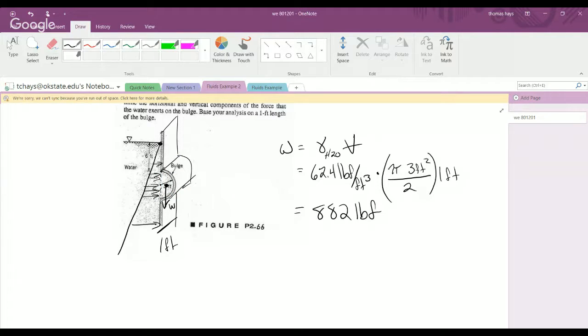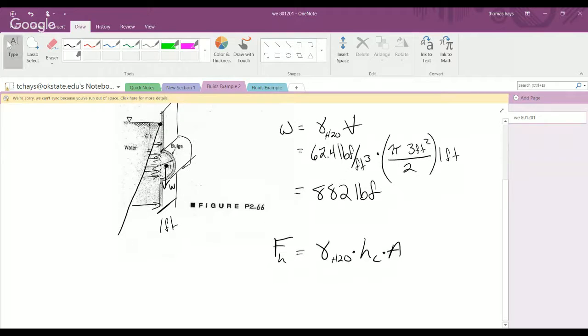Let's conclude by using the simple formula from the notes, which all come from the text anyway, that the force, in this case the horizontal force against the bulge virtual wall, will be a specific weight of H2O multiplied by the height of the centroid beneath the fluid surface, multiplied by the area this average pressure is acting across.